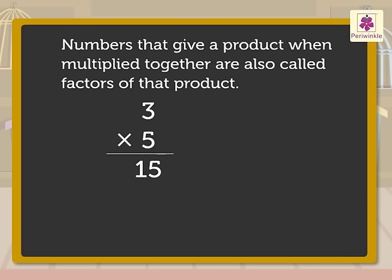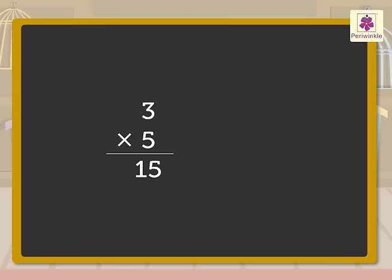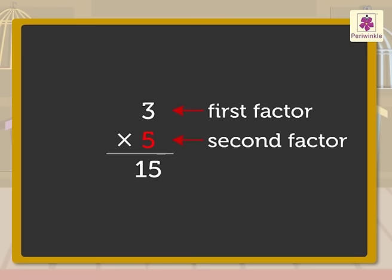Numbers that give a product when multiplied together are also called factors of that product. Here, number 3 is the first factor and number 5 is the second factor. They are called the factors of 15.